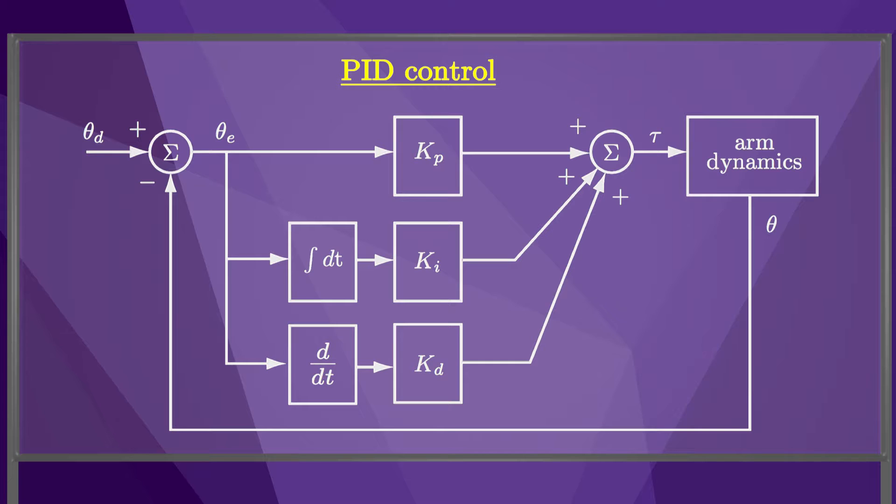This is a block diagram representation of a PID control system. P control and PI control, as we've already seen, are variants of PID control where one or two of the control gains is set to zero.